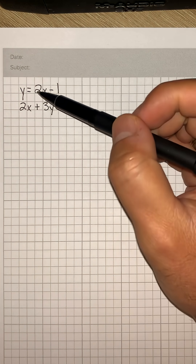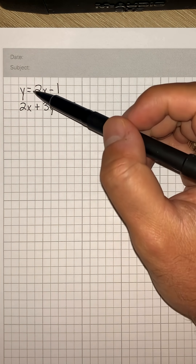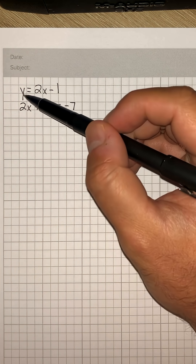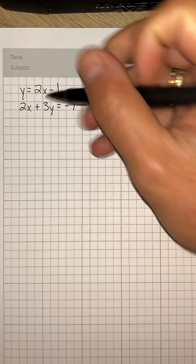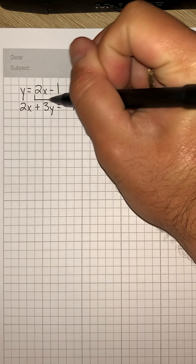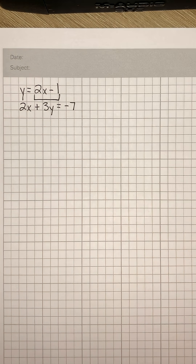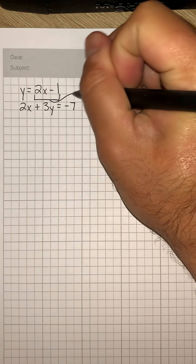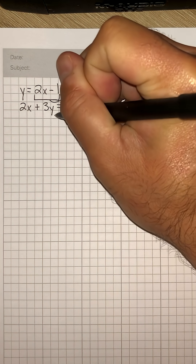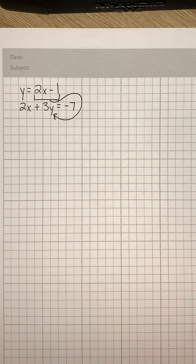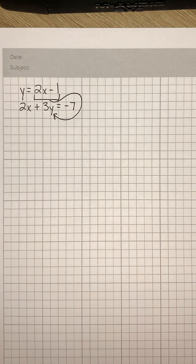Since we already have an equation that's equal to one of the variables, we can take this part of the equation, 2x minus 1, and plug that in for y in our second equation. That's called the substitution method.